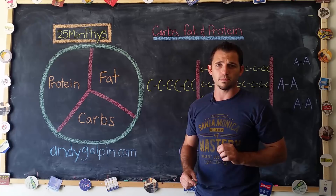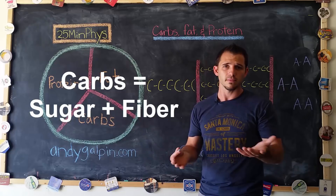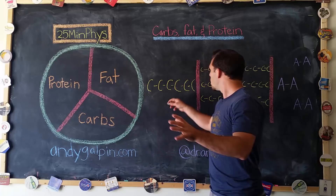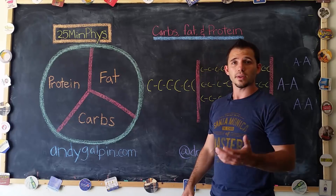Carbohydrate and sugar are roughly the same word. All sugar is a carbohydrate, but not all carbohydrates are sugar — for example, fiber is a carbohydrate but not a sugar. Our most fundamental form of energy is this six-carbon chain with all the bonds in between it. We derive energy from the breaking of those molecular bonds.